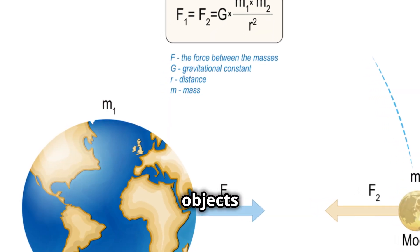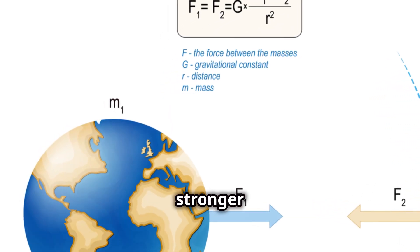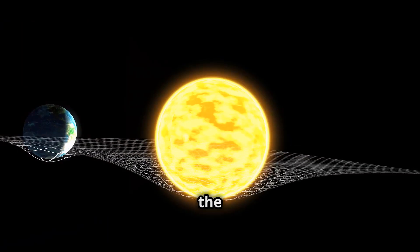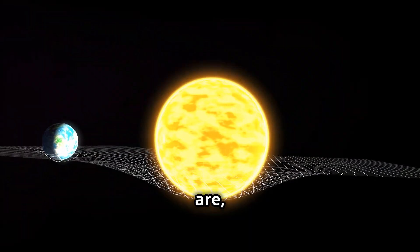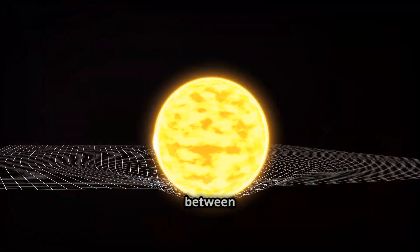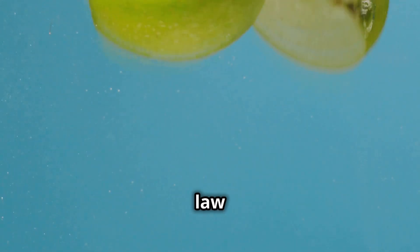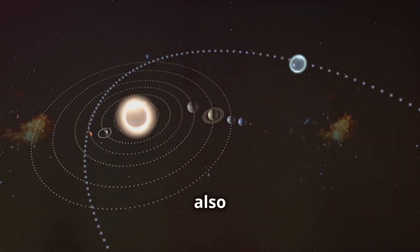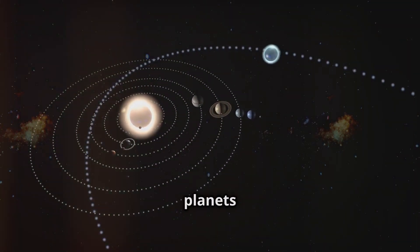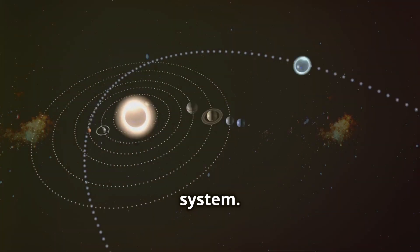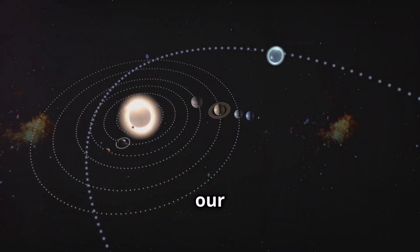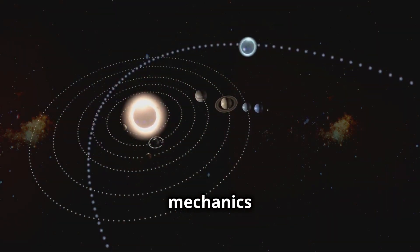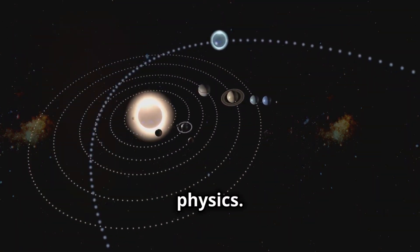In simpler terms, objects with more mass exert a stronger gravitational pull. And the farther apart two objects are, the weaker the gravitational force between them. Newton's law of gravitation explained why objects fall to the ground. It also accurately predicted the motion of planets in our solar system. His work laid the foundation for our understanding of celestial mechanics and revolutionized the field of physics.